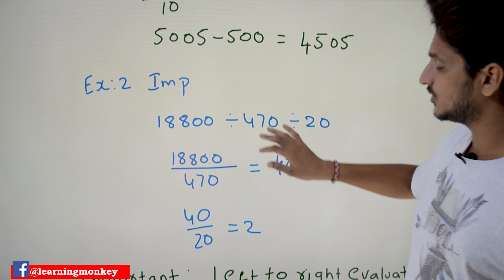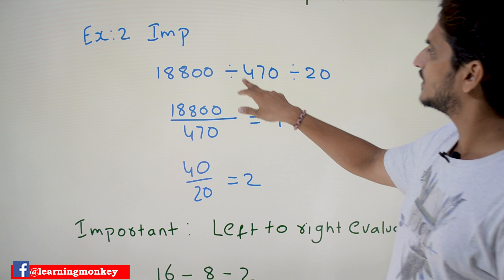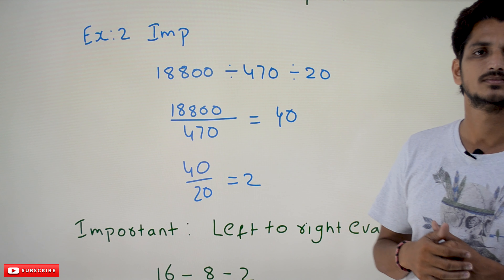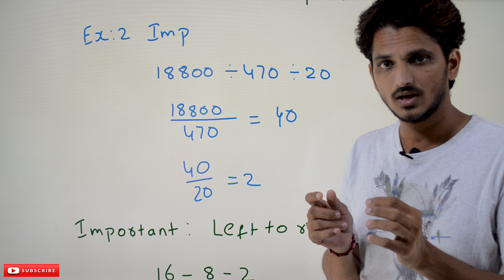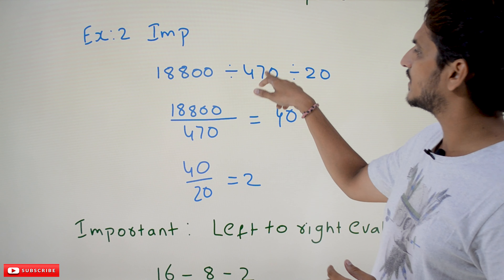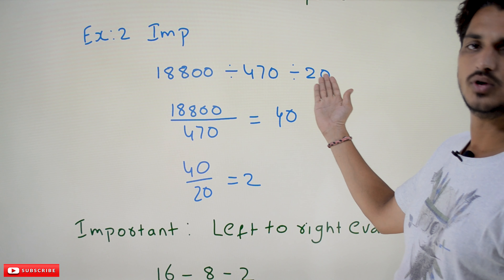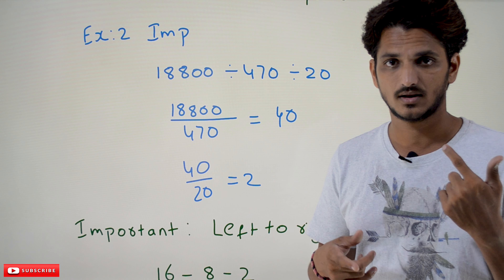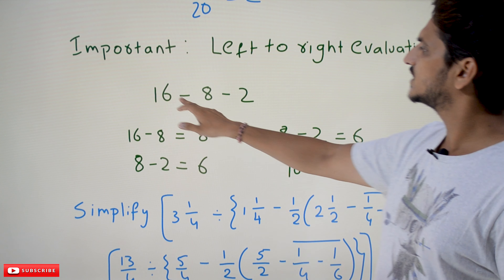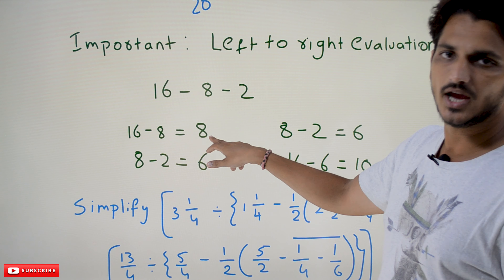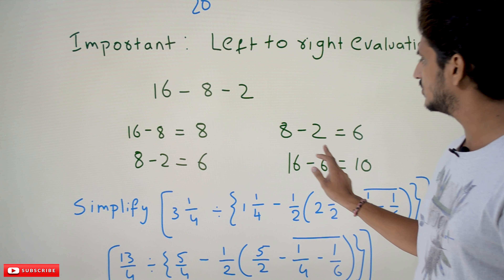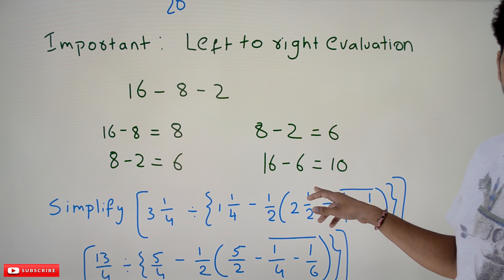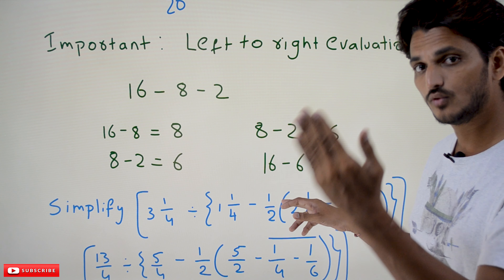One important point: consider 1800 divided by 470 divided by 20. Here both operations are division — the same symbol. Whenever you have the same operator repeated, evaluate from left to right. So 1800 divided by 470 is 40, then 40 divided by 20 equals 2. If you go right to left you get a different answer. For example, 16 minus 8 minus 2: left to right gives 8 minus 2 equals 6; right to left gives 8 minus 2 equals 6, then 16 minus 6 equals 10 — a different result. So for same symbols, always evaluate left to right.